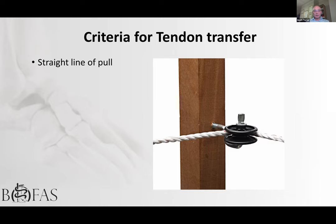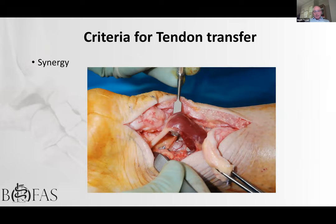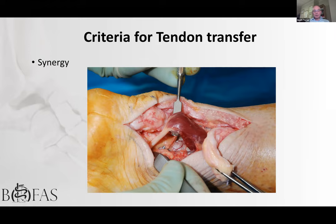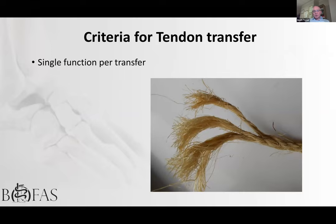Synergy means asking a muscle and tendon to do something similar to what it already does. FHL is a good example — it's already a strong plantarflexor, so using it to augment the Achilles tendon asks it to do what it already does, requiring little new learning and producing a more functional, powerful result. Only ask a tendon transfer to do one thing; splitting a tendon to do multiple different functions produces poor results.